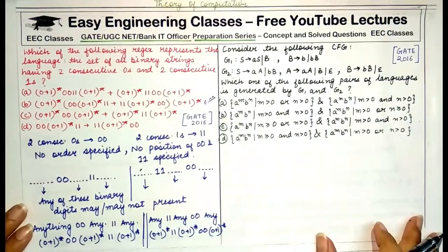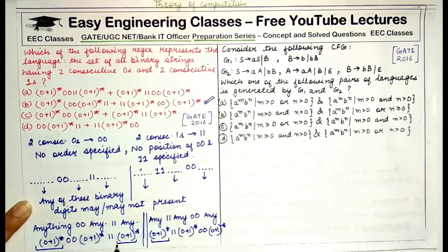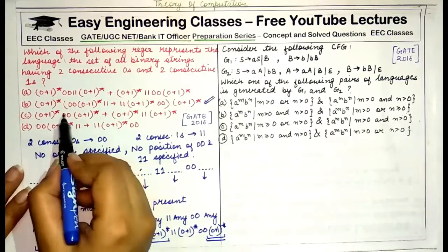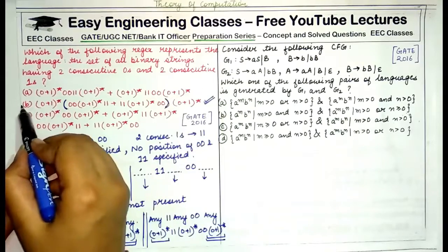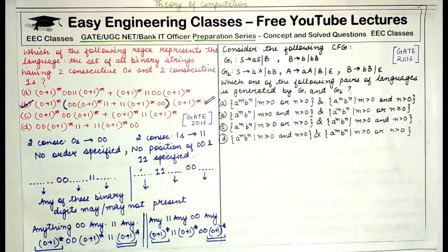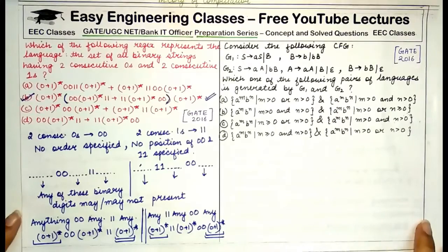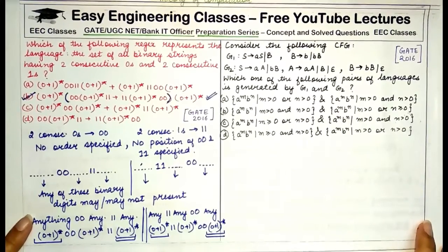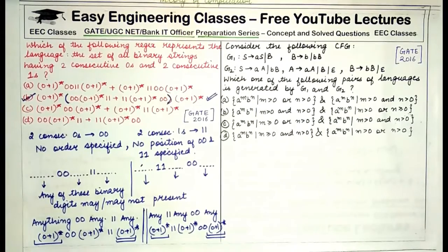In both expressions the common parts are the beginning (0+1)* and the end (0+1)*. Taking these common, you are left with the remaining part, which forms Answer B. This is the regular expression representing the set of all binary strings that have two consecutive zeros and two consecutive ones. No other condition is specified, so no other condition needs to be considered.